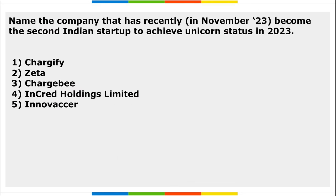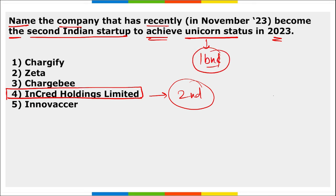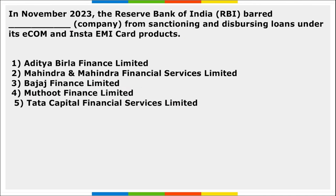Next: name the company that has recently become the second Indian startup to achieve unicorn status in 2023. It is InCred Holdings Limited — the second Indian startup to achieve unicorn status. A unicorn is when a company's valuation reaches 1 billion dollars.